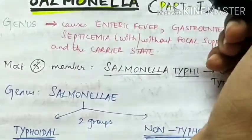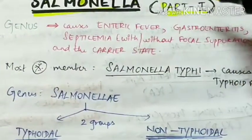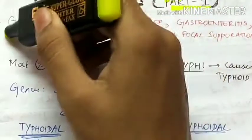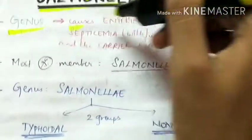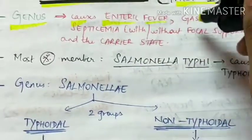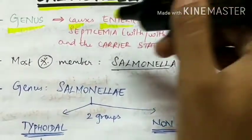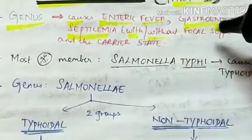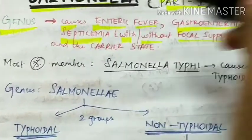Salmonella Part 1. The Salmonella is a genus which causes diseases like enteric fever, gastroenteritis, and septicemia with or without focal suppuration and the carrier state.